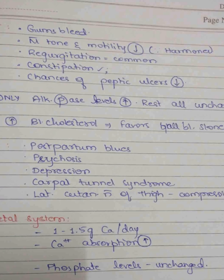In the nervous system, postpartum blues, psychosis, depression, and cravings for certain objects become more common. Paresthesia and pain in the hands and arms lead to carpal tunnel syndrome, which is also common. Due to lateral compression of the thighs, there is decreased sensitivity of the lateral cutaneous nerve of the thigh.